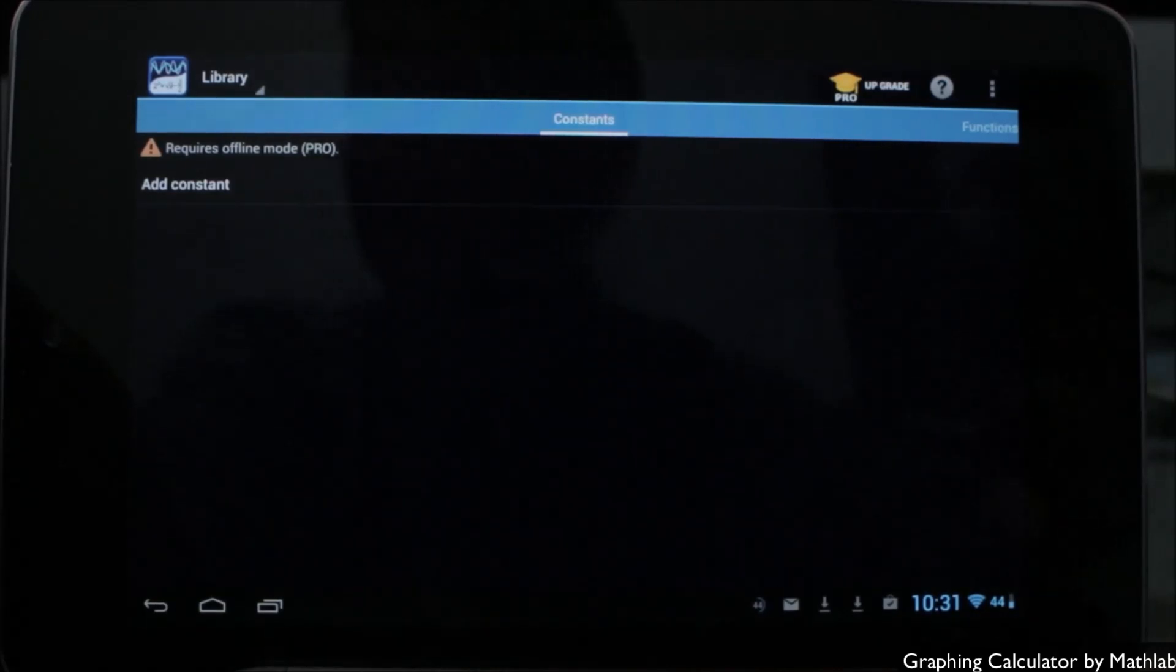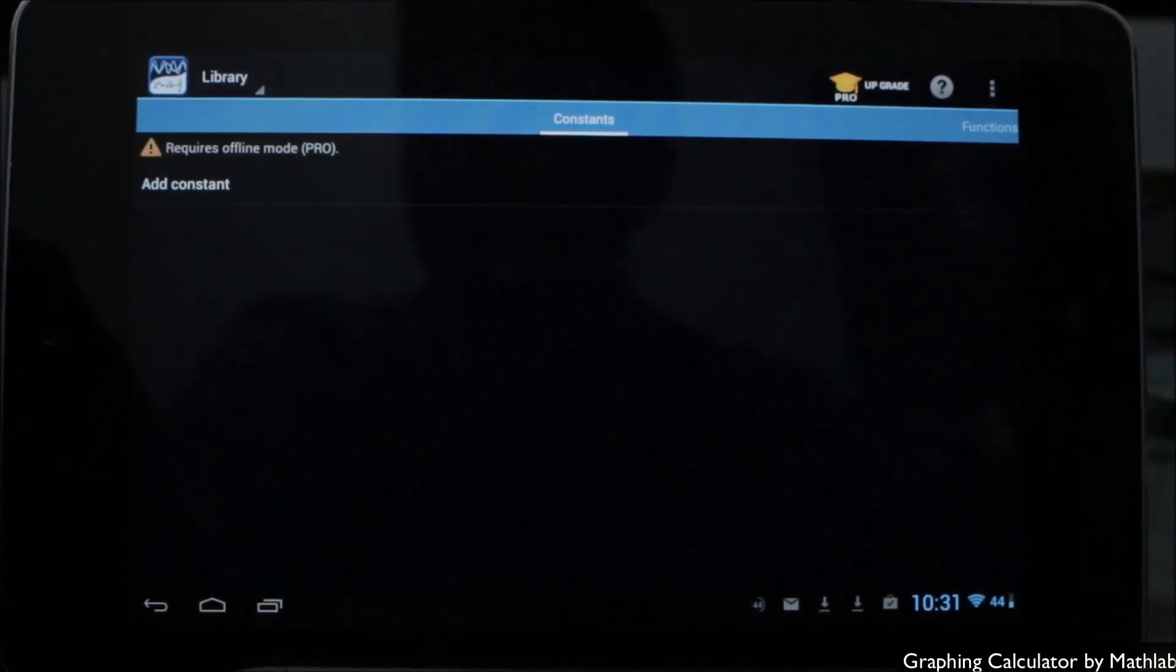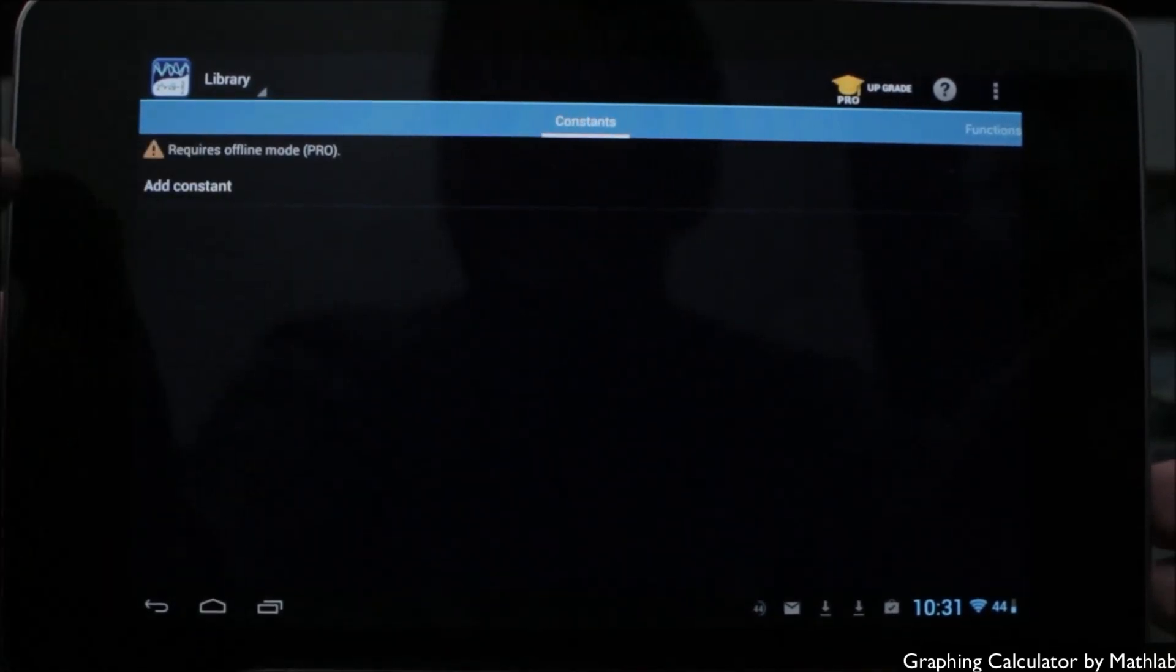Last but not least, we have the library mode which can be used to enter and save things like your own constants, functions, and expressions in this library so that they can be used in the future whenever you need to use them or reference them again.